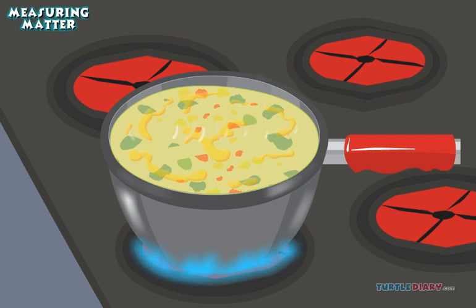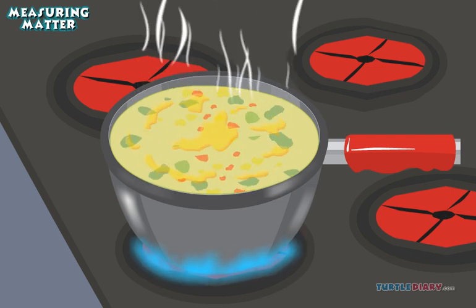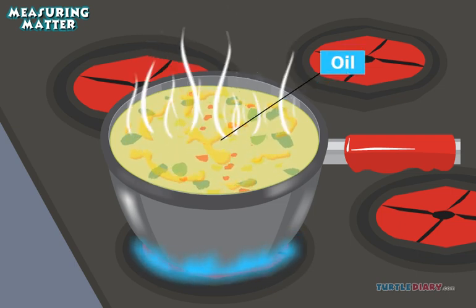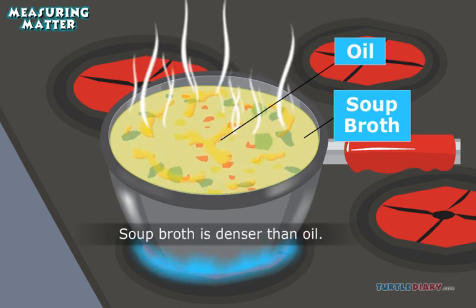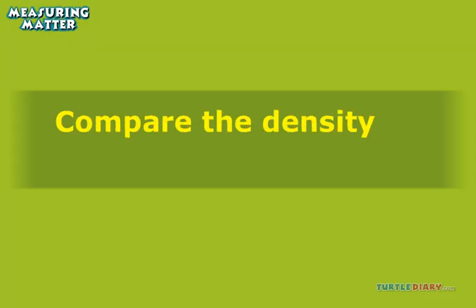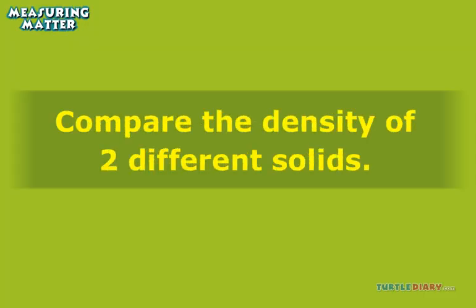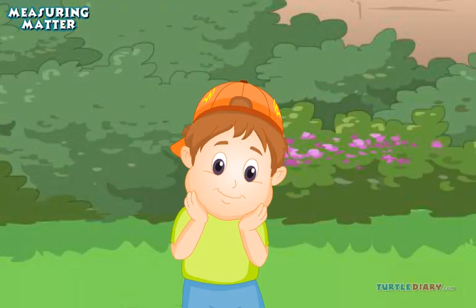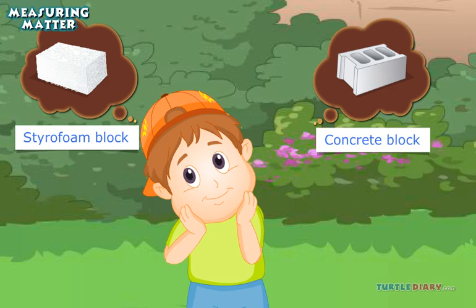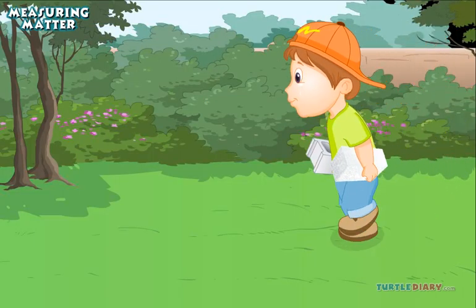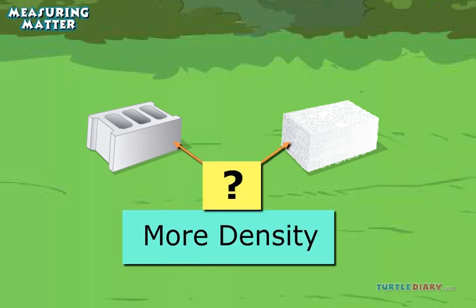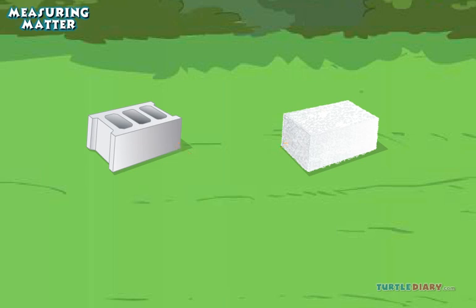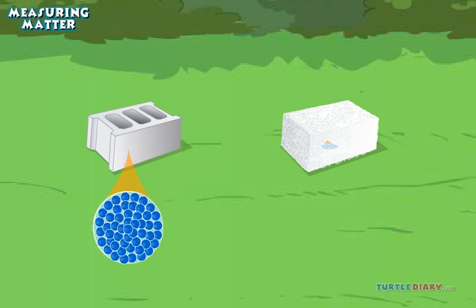Think about the oil floating on top of Matt's soup. Which one has more density — the oil or the soup broth? Soup broth is denser than oil. Now let's compare the density of two different solids. Let's think about a block of concrete and a block of styrofoam. These two blocks have the same volume — they take up the same amount of space — but which has more density? Concrete block is more dense than a styrofoam block.